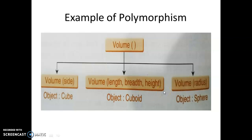Another example we can take: suppose area. If we want to find out the area of different shapes — maybe a rectangle: you need length and breadth. Maybe area of circle: then you need pi r squared, which is the formula of circle, and you only need the radius. And if you want to find out the area of a square, then you need the side. But my purpose is to find out the area. So the purpose is to find out the area, but we have different inputs to do so, and our aim is to find out the area.